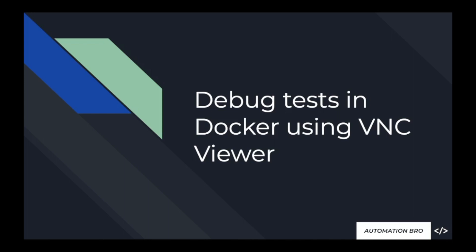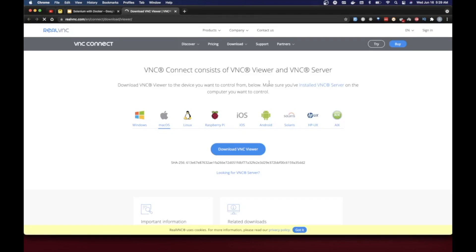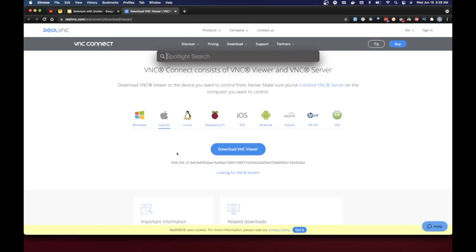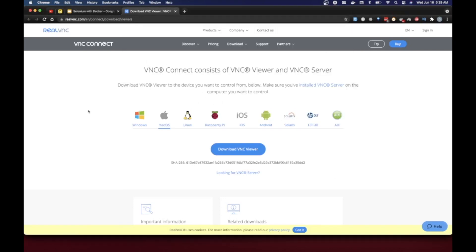Now that that's clear, let's look at what we need to do to get started. How can we set up VNC for Docker? The first thing is we need a VNC client. In my case I'm going to be using RealVNC. You can download it for your particular operating system — here I'm on macOS. Once it's downloaded and opened, it will look like this. If you're using Windows it's going to be the same for you.